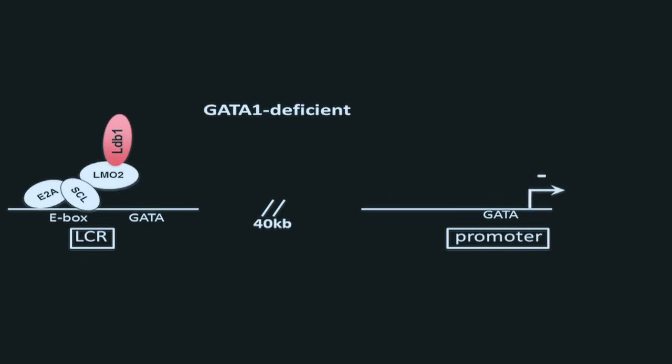In the absence of GATA1, LDB1 fails to associate with the beta-globin promoter, but remains associated with the LCR through its interaction with the SCL complex. Therefore, LDB1 recruitment to the promoter must represent a critical rate-limiting step in inducing the LCR promoter loop and activating transcription.